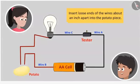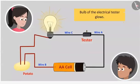Okay, now first create a similar circuit like we had done earlier. Connect the wires with battery and the tester. The electrical tester, done. Now insert the two loose ends of the wires about an inch apart into the potato piece. Yes, yet again the bulb of the electrical tester lights up. Yes, this is because this circuit is complete, but wait for about 20 minutes.